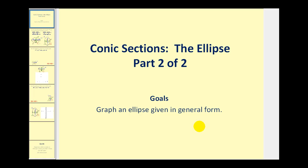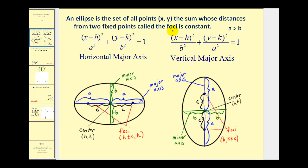Before we do that, let's review. If we have the equation of an ellipse in standard form, the center will be (h, k). Since a is greater than b, the fraction with the larger denominator tells you whether the major axis will be horizontal or vertical. If the larger denominator is under the x part, we have a horizontal major axis; if it's under the y part, we have a vertical axis.